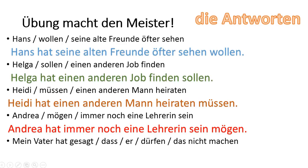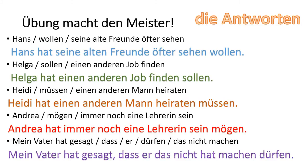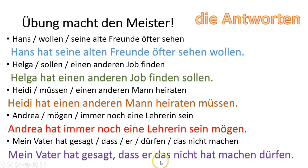Now the last one — did you remember your word order? Haben has to go before the double infinitive construction. Mein Vater hat gesagt, dass er das nicht hat machen dürfen. Because when we learned about subordinating clauses with subordinating conjunctions, the conjugated verb gets pushed to the end. But here, the double infinitive trumps that rule — hat gets pushed before the double infinitive construction. Vielen Dank.